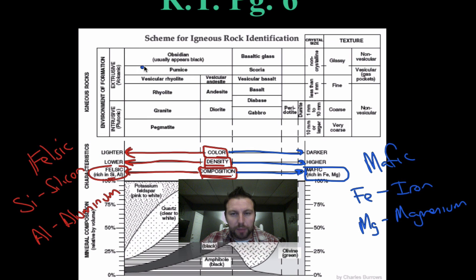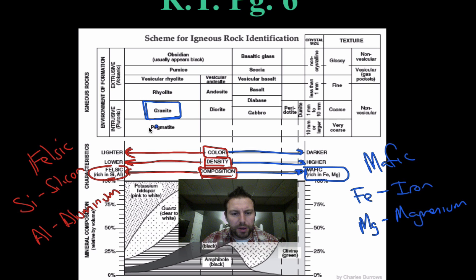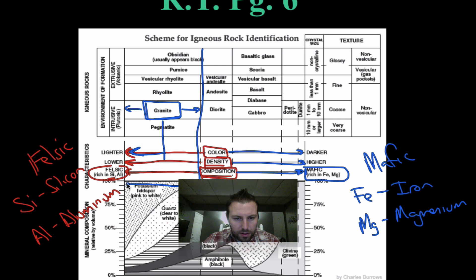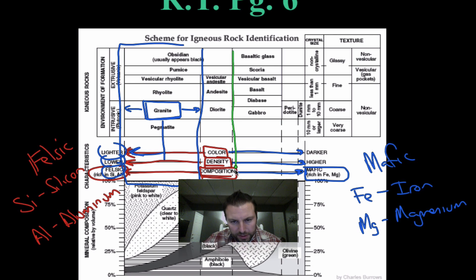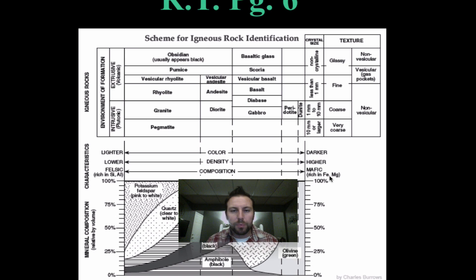Looking at examples of our igneous rocks — obsidian, pumice, rhyolite, granite, pegmatite. Granite is a nice easy one to start with. It's going to be on the lighter side — notice it has a range from really light to medium color or a combination of light and dark minerals. Since it's on the left side of the chart, it will have lighter color, lower density, and be felsic. Anything on the right side — like gabbro, for instance — will be towards the darker, higher density, mafic side. So based on whether it's left or right, we can determine its color, density, and composition.